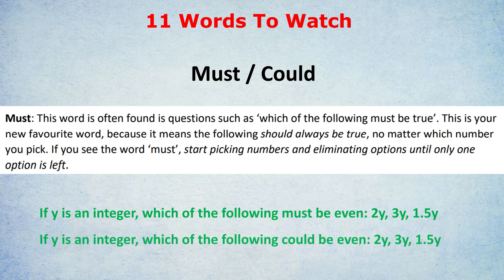Notice, therefore, if the question had been could, which is the alternative word for these tick-all-the-apply questions, then it's a very different answer. With the word could, you only need to find one example that works. So all of these could be even. 2Y is always even, so that definitely could be even. If Y is 2, then 3Y is even, so that could be even. If Y were 4, then 1.5 times 4 is 6, so 1.5Y could be even. That's the big difference.